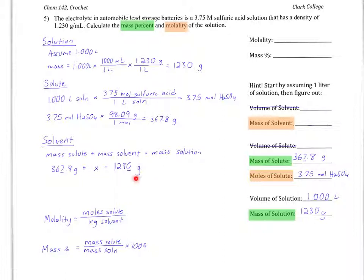In the total solution mass of 1,230 grams, 367.8 grams are solute alone. The remainder must be the mass of the solvent. So the solvent has a mass of 862.2 grams. I'll fill that in over here.